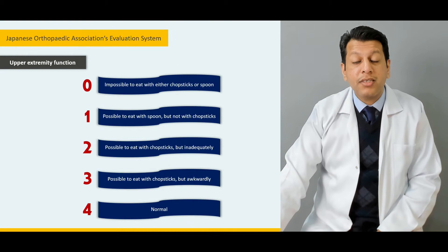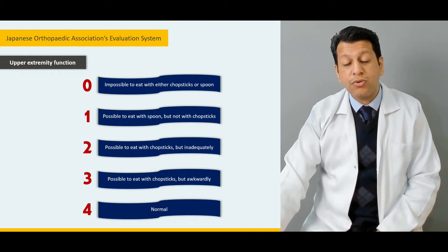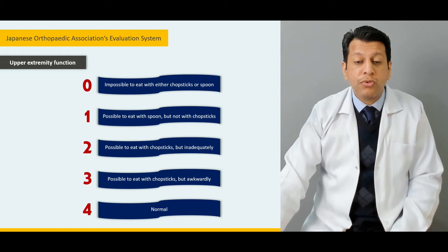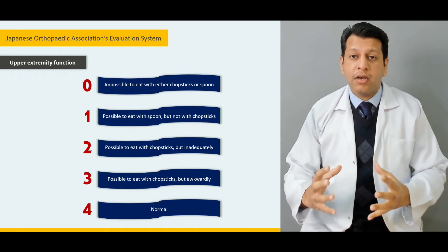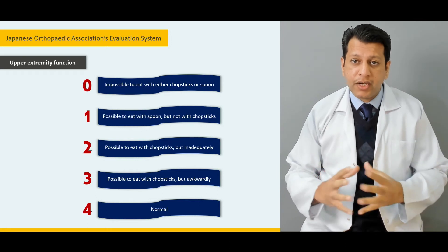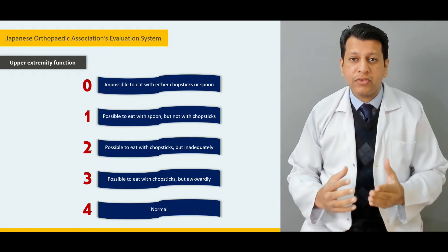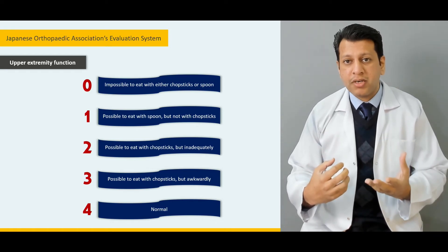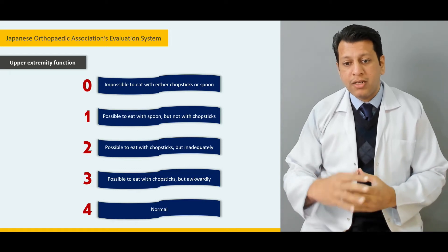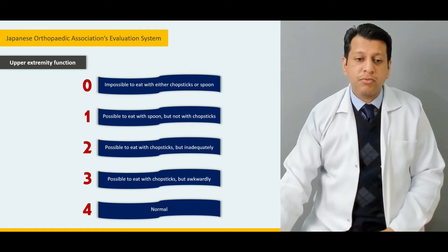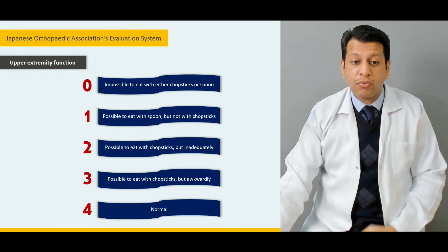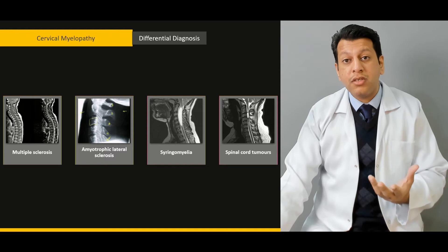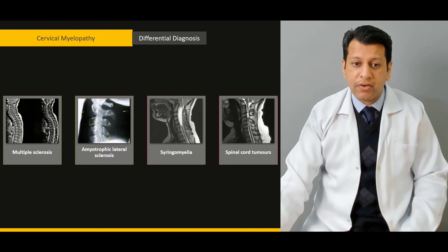Then we'll discuss classification systems. There are multiple systems, but we'll focus mainly on the Japanese Orthopedic Association (JOA) evaluation system, because it is more comprehensive and incorporates sensory as well as upper and lower motor neuron aspects, urinary and bowel bladder control. We'll cover in detail how to assess upper extremity function, lower extremity motor function, sensory function, and bladder function.